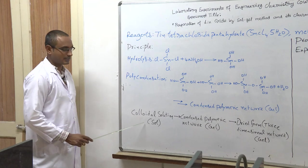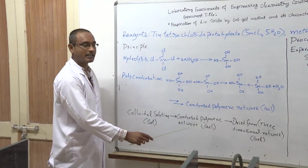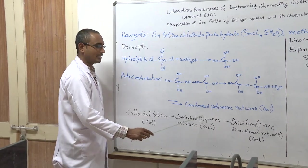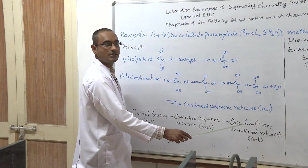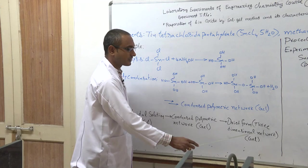After that, this condensed polymeric network will be dried to get three-dimensional polymeric network. To summarize this principle, colloidal solution was made. After that it will be converting into condensed polymeric network. Here you can see the transformation of sol to gel. And this gel again dried to convert this condensed polymeric network into three-dimensional network.